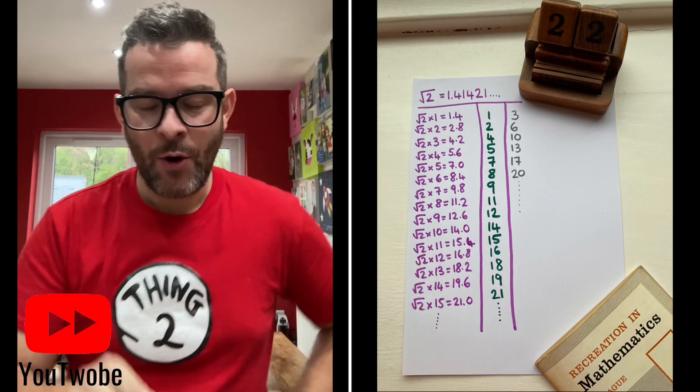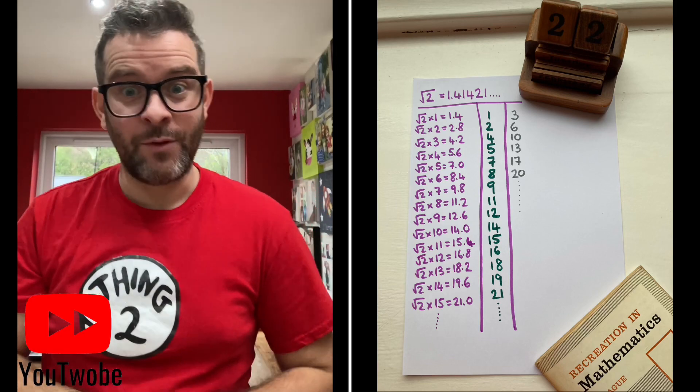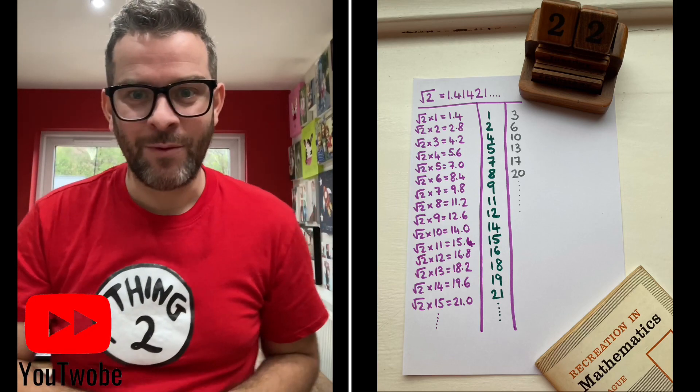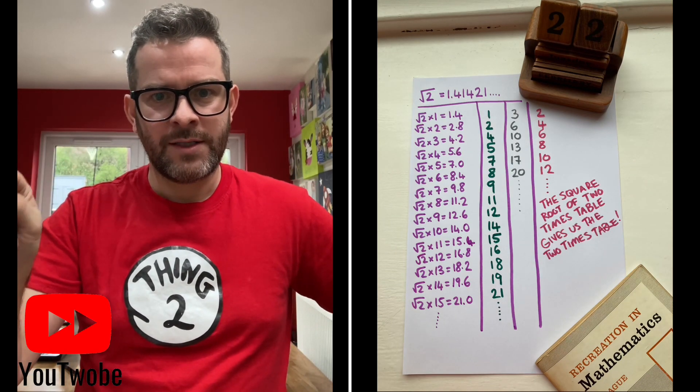And the last thing, this is nifty. We're going to take away the numbers in the last column that we've got away from the numbers in the column next to it, and we're going to get 2, 4, 6, 8, 10, 12. Wait a minute. It's the 2 times table.